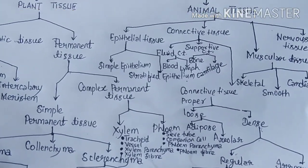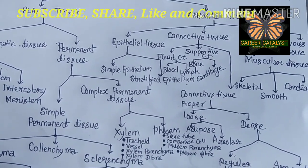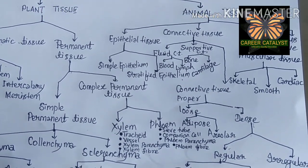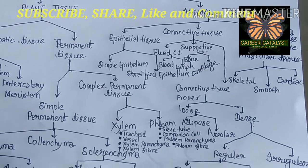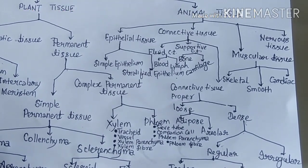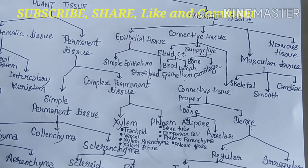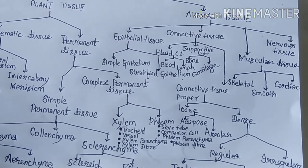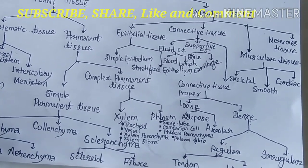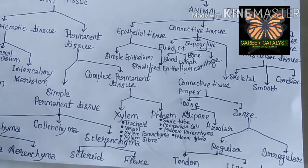Connective tissue proper is the third type of connective tissue. It is of two types: loose connective tissue proper and dense connective tissue proper. Loose connective tissue proper is of two types: areolar tissue and adipose tissue. Areolar tissue is present just between our skin and muscles.